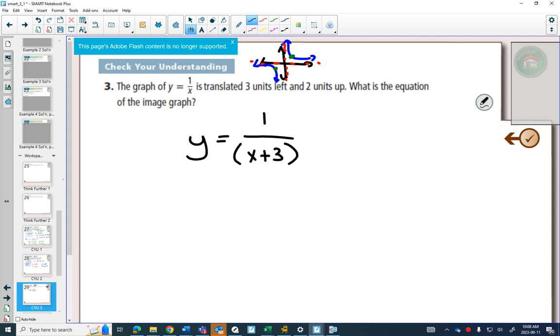So moving left and right, when you have the actual equation, changes what the x was. The x was just an x. Now that x is an x plus three because you moved it three to the left. Moving up and down is outside of the function. So if I moved it up two units, that happens afterwards, plus two.